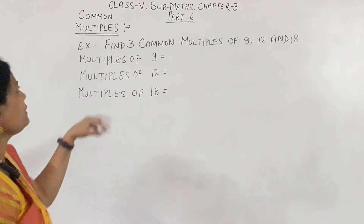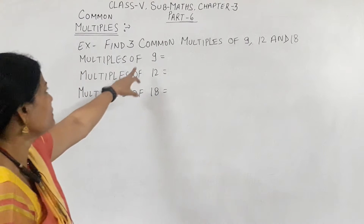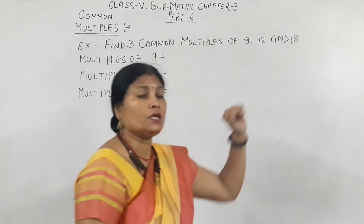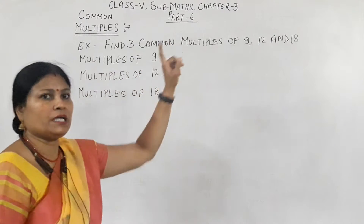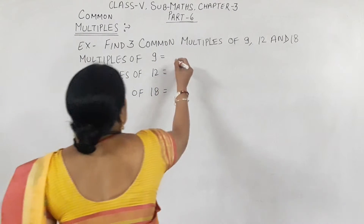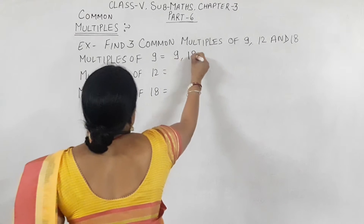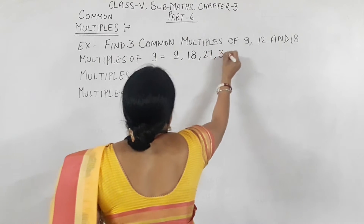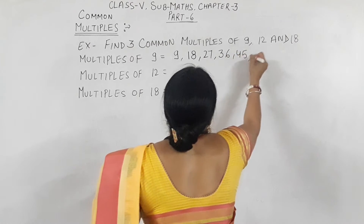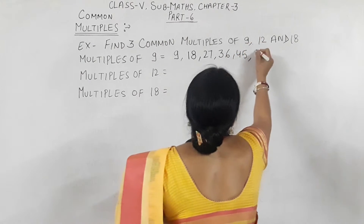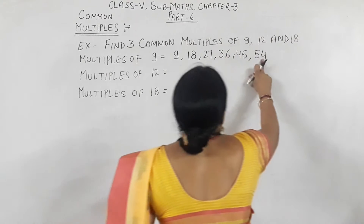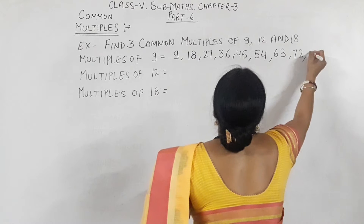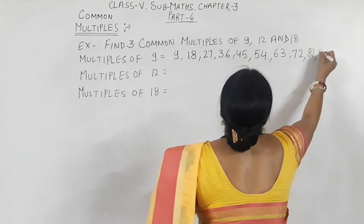We are talking about common multiples. First, I have to write down the multiples of the given numbers. The question asks: find 3 common multiples of 9, 12, and 15. So step one: write down multiples of 9 — that means the table of 9. So: 9, 18, 27, 36, 45, 54, 63, 72, 81, 90, and so on.